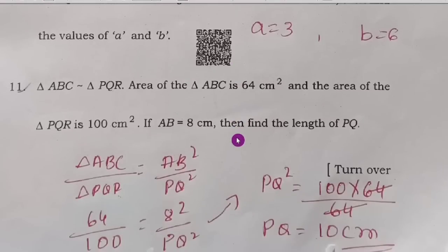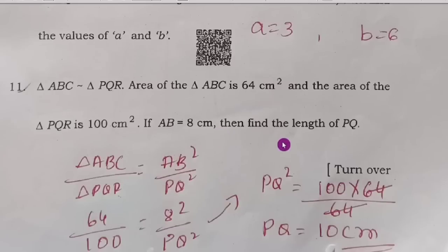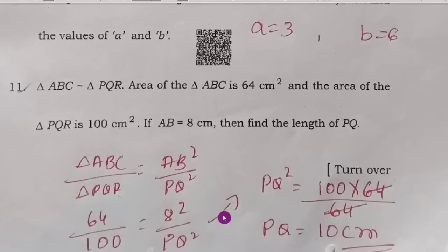Eleventh question: triangle ABC is similar to triangle PQR. Area of triangle ABC = 64 cm², area of triangle PQR = 100 cm², and AB = 8 cm. Find the length of PQ. Using the ratio: 64/100 = 8²/PQ². Therefore PQ² = (100 × 64)/64 = 100, so PQ = 10 cm.